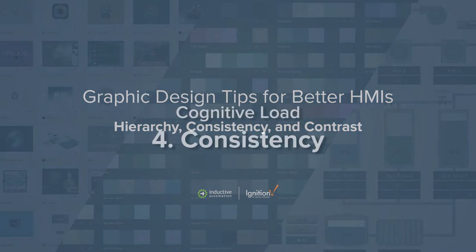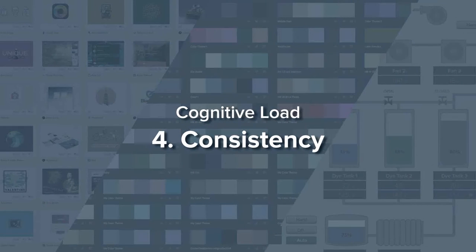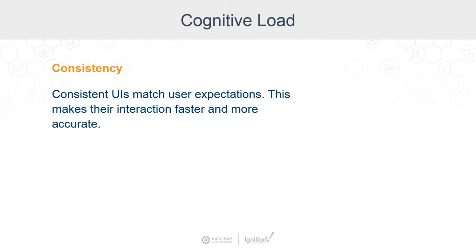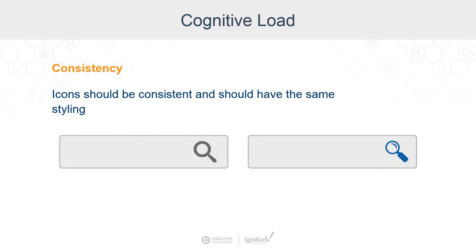The fourth item we'll be talking about is being consistent. Consistent UIs match user expectations, which makes it easier for them to interact faster and more accurately. For example, if you pull your icons from an icon library, make sure that you pull new icons from that same library, or at least make sure that they look similar.